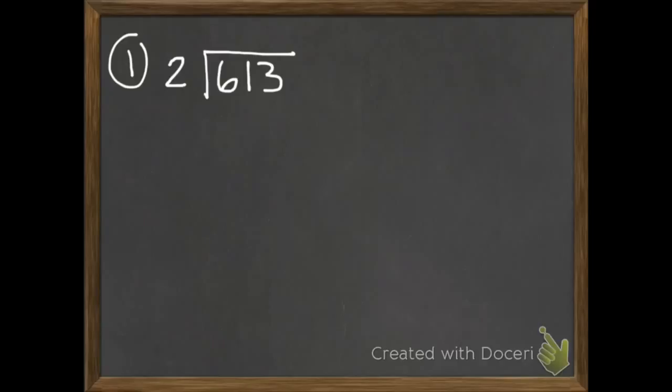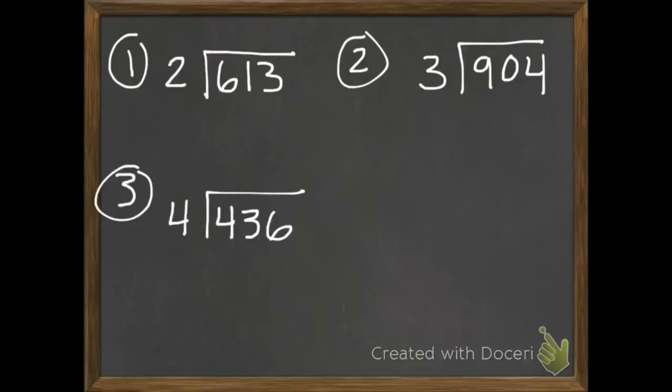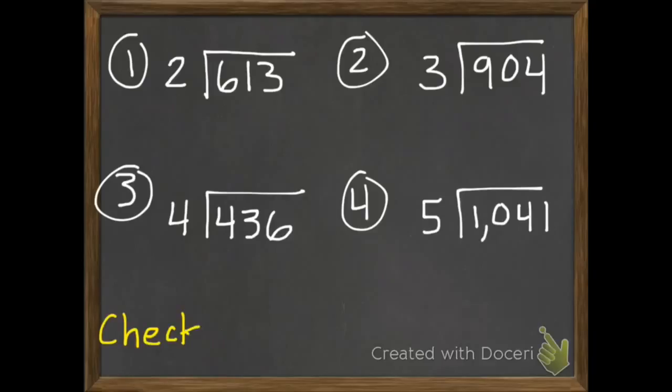Here's the problems you're going to bring to class tomorrow so I can see how you're doing, if you're getting it. Your first one is 613 divided by 2. Second, 904 divided by 3. 436 divided by 4, and 1041 divided by 5. I do want you to check with multiplication. So tomorrow when you get to class I will check your notebooks and see how you're doing. So that is the end of today's lesson.